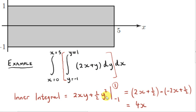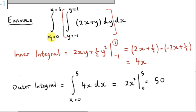Then we subtract the expression with y replaced by minus 1, and working this out we get 4x. Since we integrated a function with respect to y, we end up with a function of x only — y does not appear in the result for the inner integral. Next, the outer integral: we integrate 4x with respect to x from x equals 0 to x equals 5. We add 1 to the power to get x squared, divide the coefficient by 2 to get 2. Substituting the limits, our answer is 50.